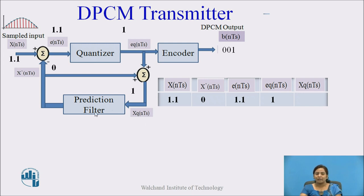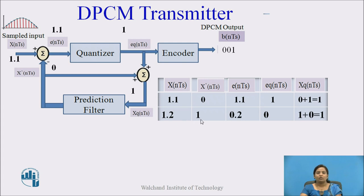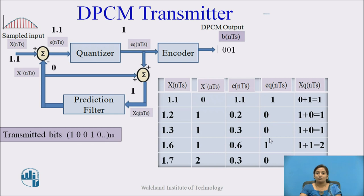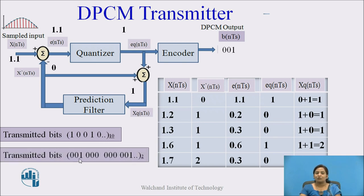XQ(NTs), the input to the prediction filter, at this step is 0 + 1 = 1. After that, if we give the input sample 1.2, the previous predicted value is 1. The difference between 1.2 and 1 is 0.2, and this signal is quantized at the nearest standard value, which is 0. So XQ(NTs) becomes 1 + 0 = 1. The EQ(NTs) data bits for the respective samples are 1, 0, 0, 1, 0. This data is encoded, so the transmitted data is 0, 0, 1, 0, 0, 0, 0, 0, 0, 0, 1, and so on.